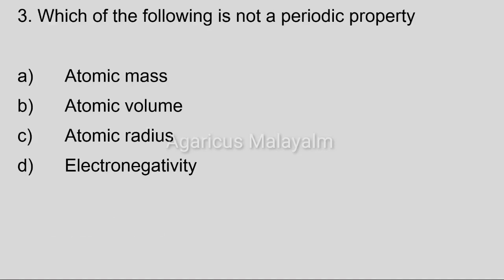Third question: Which of the following is not a periodic property? Option A: atomic mass, Option B: atomic volume, Option C: atomic radius, Option D: electronegativity. Correct answer: Option A, atomic mass.